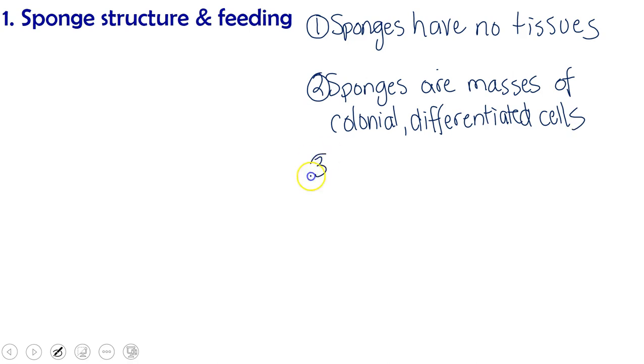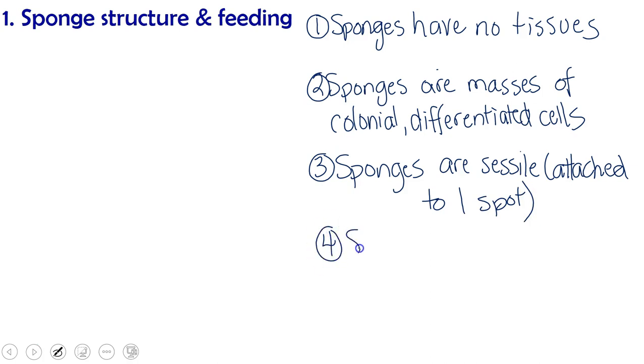Sponges are sessile, meaning that they are attached to one spot. And because they are attached to one spot, they can't go catch their food. And so sponges are filter feeders. Meaning they filter their food out of the water.